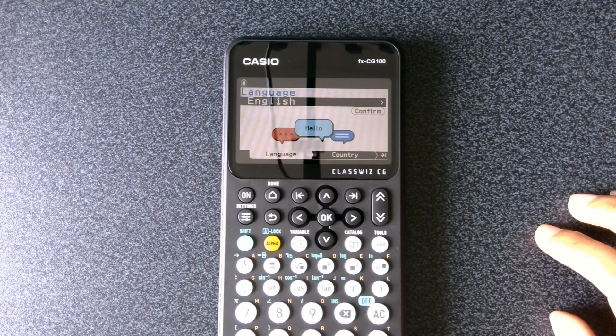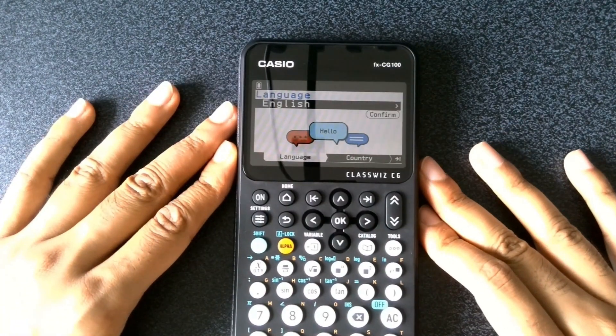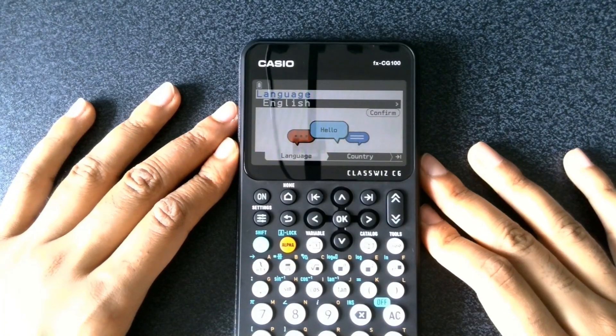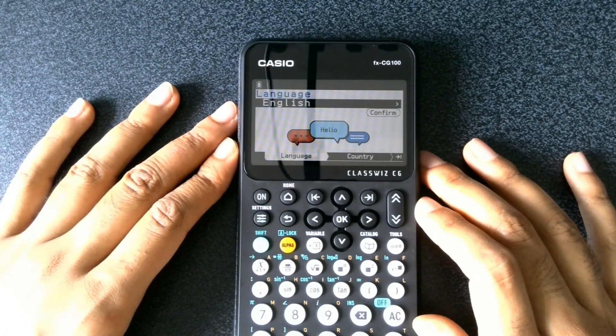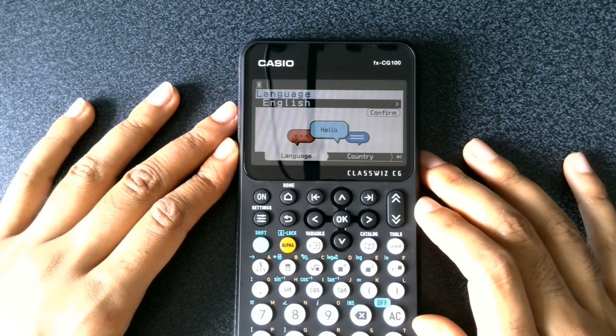When we put the batteries in, we've got this screen which appears. This will essentially allow us to set up the calculator for its first use.